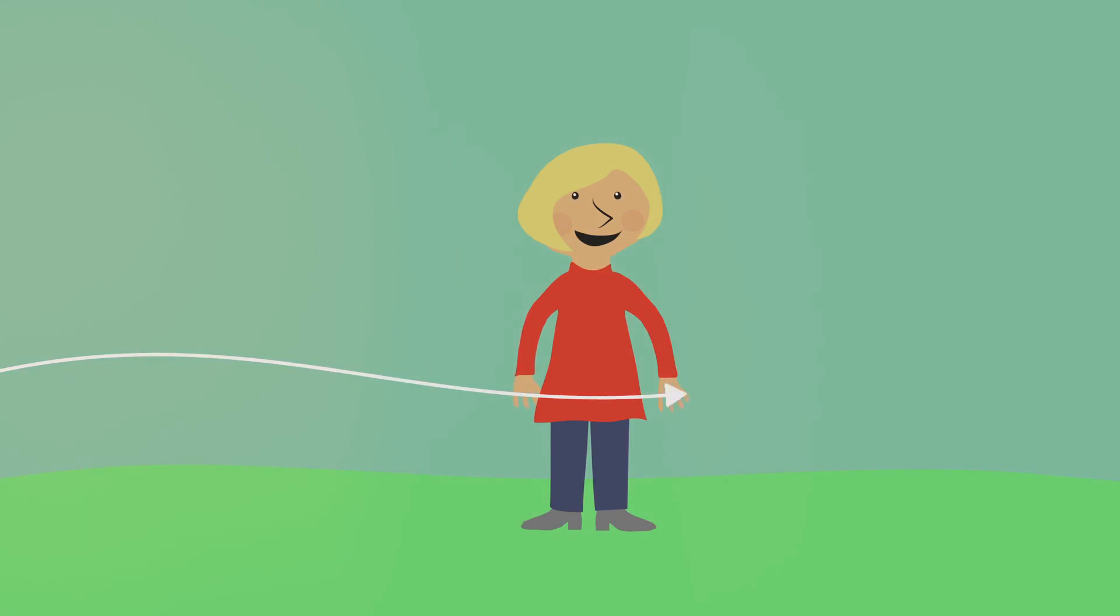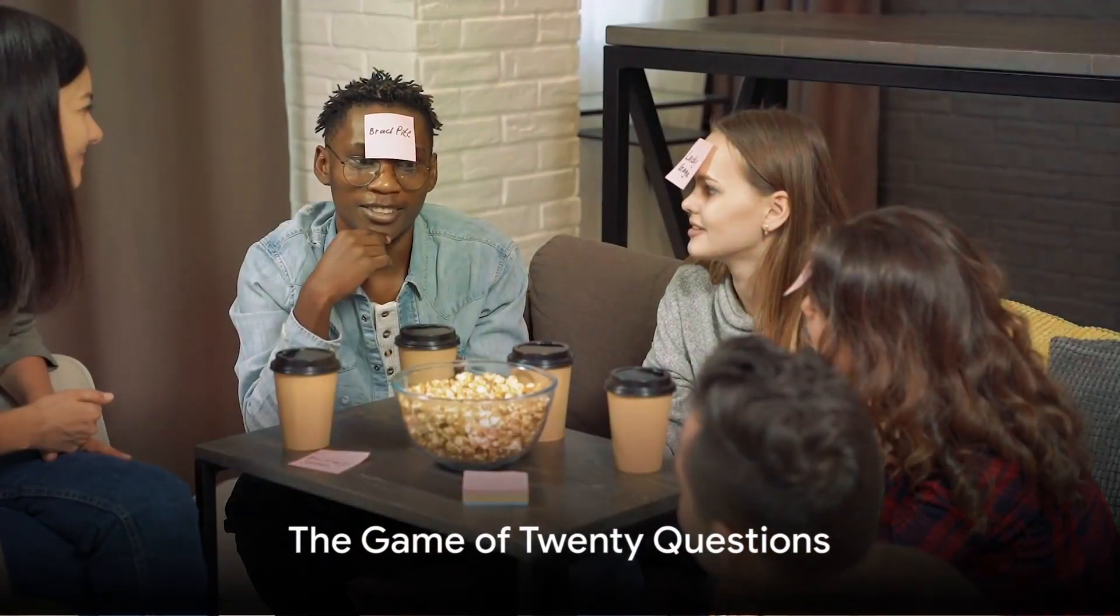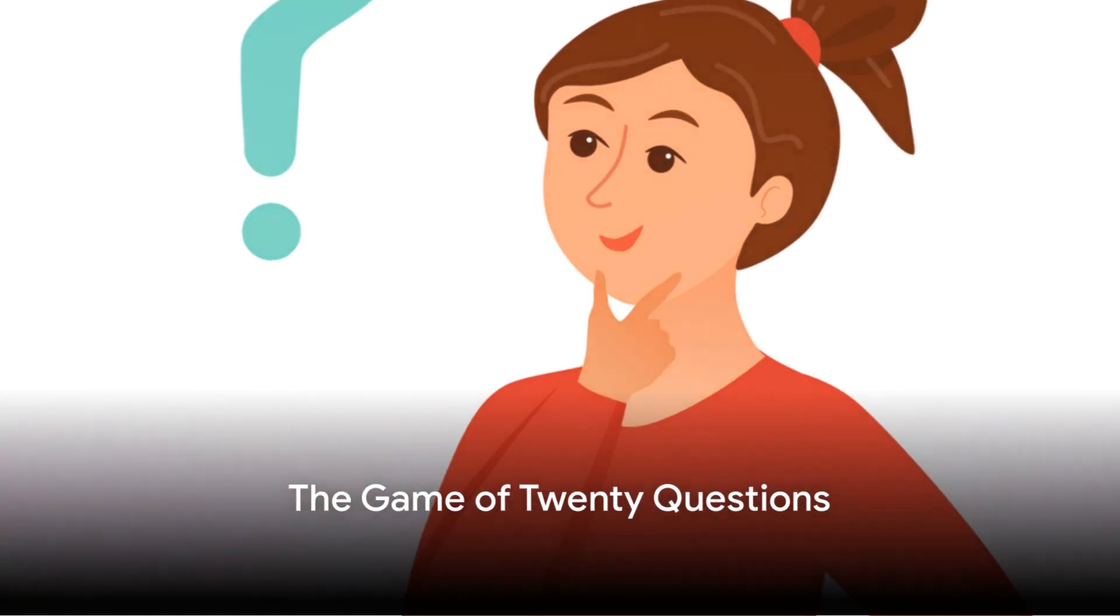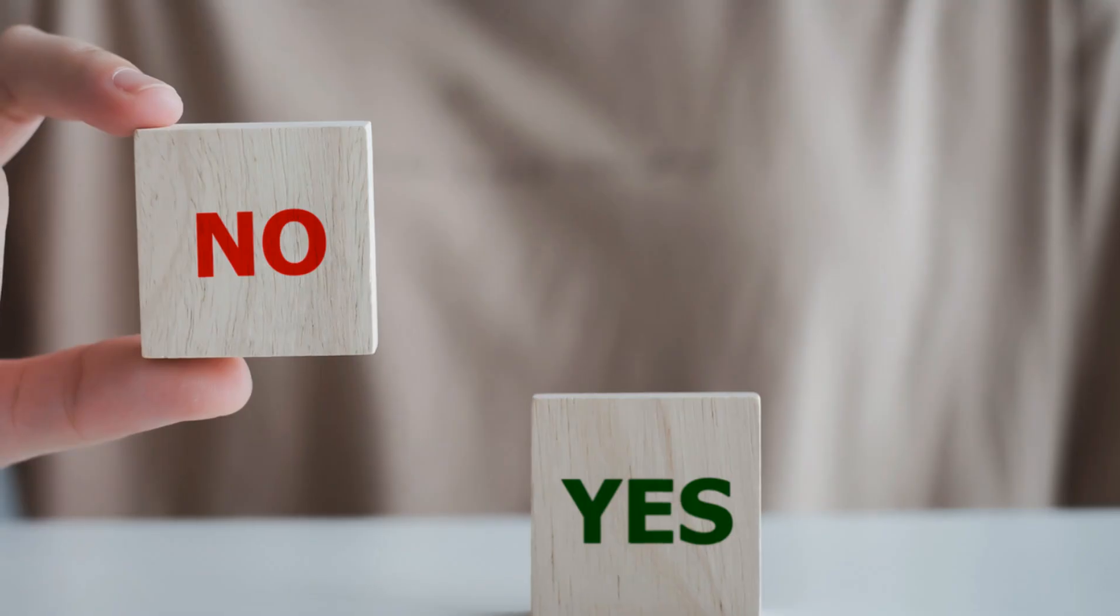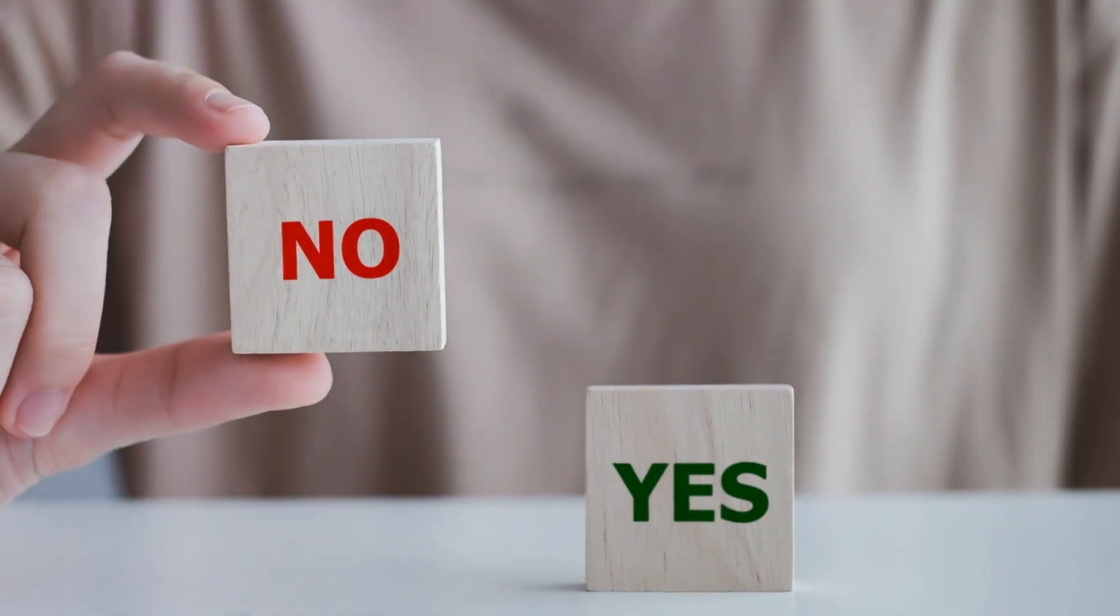And to do that, we often use a fundamental learning algorithm known as the decision stump. Imagine a game of 20 questions, you're the guesser and the other person has thought of an object. You can only ask yes or no questions to figure out what it is.